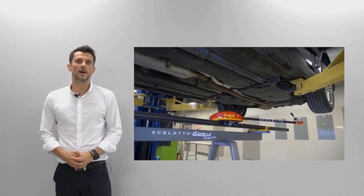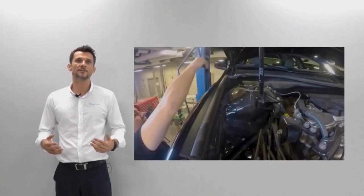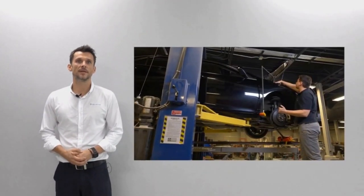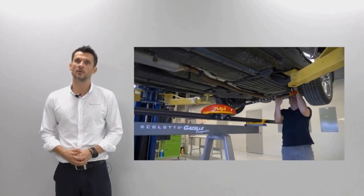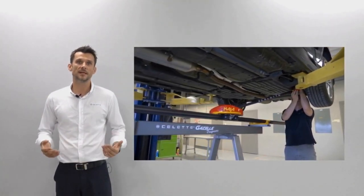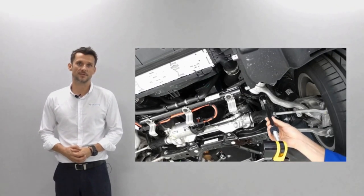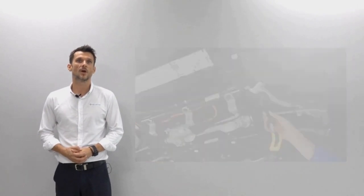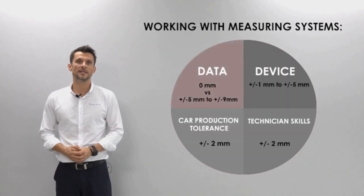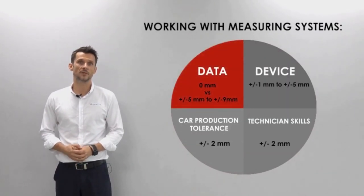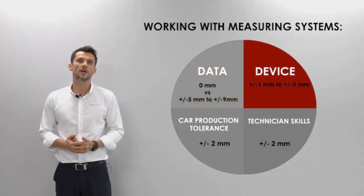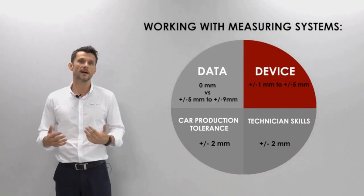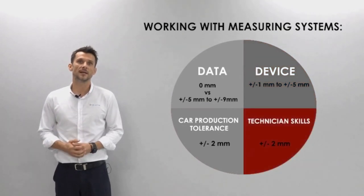Let's talk a little bit about the device itself. It is important to understand where the additional tolerance can come from. Imagine that the data we just spoke about was created with a tolerance of five to nine millimeters — this data is already in your measuring system and you trust it. So when you go to measure the car, you automatically add more tolerance without knowing it. On this diagram, in the first part we see that the data can be anywhere from zero up to nine millimeters. In the second quarter we have the tolerance of the device itself, which can be anywhere from one to five millimeters. In the third quarter we see again the skills of a technician, which can be up to two millimeters.